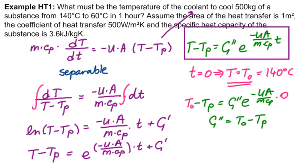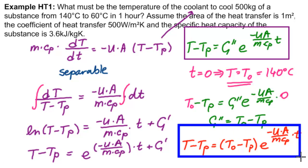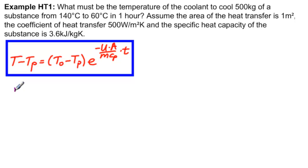We get C double prime equals T0 minus TP. So we put that into this to get our final solution. That would be T minus TP equals T0 minus TP times e to the minus U times A over MCP times t. That's our function for temperature as a function of time.